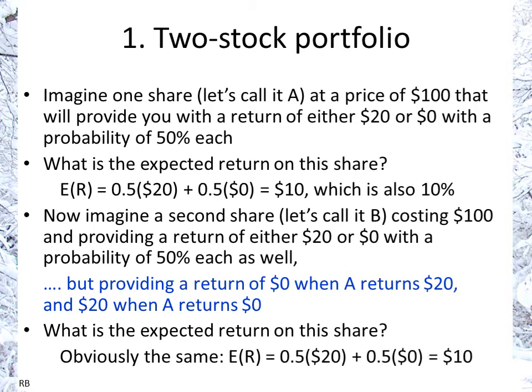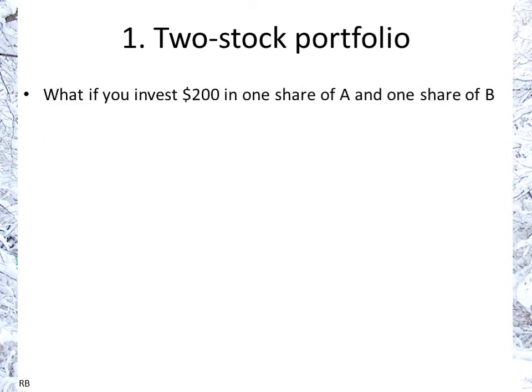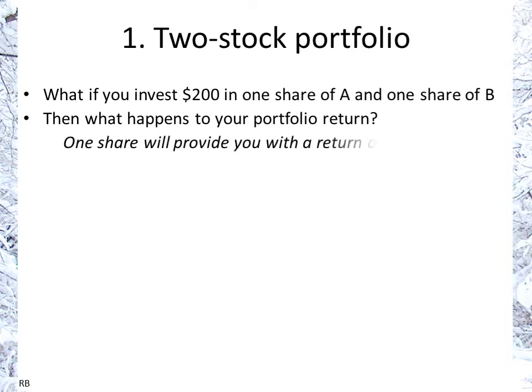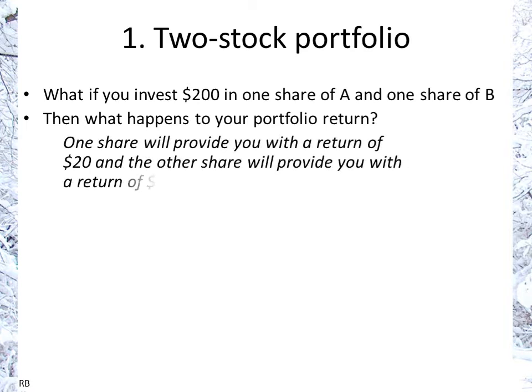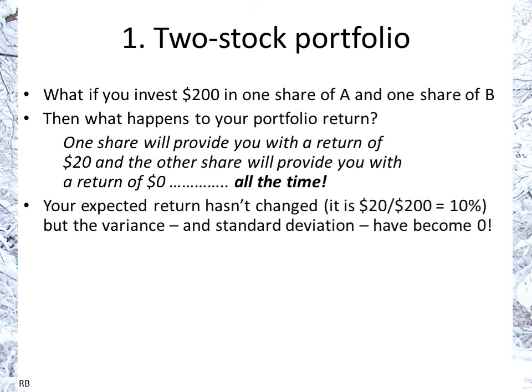So the return is literally the mirror image. The expected return on share B is again $10 or 10%. So what if I invest $200 — $100 in A and $100 in B? One of the shares will provide a $20 return and the other will give nothing. When A gives you 20, B gives you 0; when A gives you 0, B gives you 20. So you will always receive a return of $20 for that $200 investment. Your expected return hasn't changed — 10% — but the variance or standard deviation has become 0. You are guaranteed to always receive a 10% return.